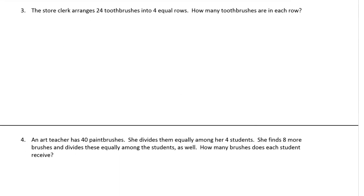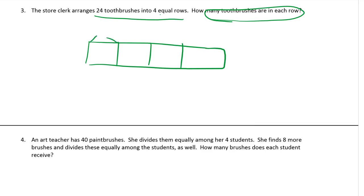The store clerk arranges twenty-four toothbrushes into four equal rows. How many toothbrushes are in each row? So we know that there are... Here's our tape diagram. We know there's four equal rows. But we don't know how many toothbrushes. But we do know from beginning to end here that there's a total of twenty-four.